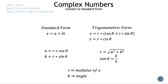Standard form is z = a + bi, where a = r·cos(θ) and b = r·sin(θ). In trig form, z = r(cos θ + i·sin θ), or z = r·cis θ. Where r = √(a² + b²) and tan θ = b/a. r is the modulus of z, and θ, or the argument, is the angle.